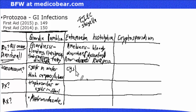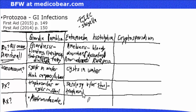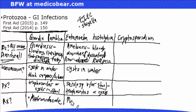Transmission of Entamoeba histolytica is by cysts in water. Diagnosis is made by serology and/or looking at the stool for trophozoites or cysts. First Aid makes a point that trophozoites have red blood cells in the cytoplasm — a high-yield point. The cysts will have up to four nuclei. We treat Entamoeba histolytica with metronidazole followed by iodoquinol, which is used for asymptomatic cyst passers.